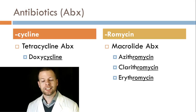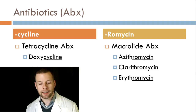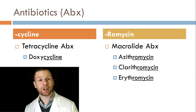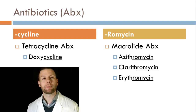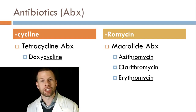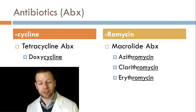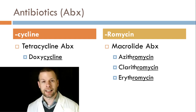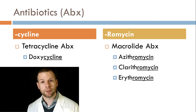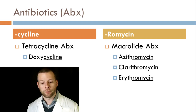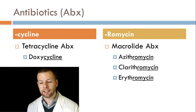Anything that ends in '-cycline' is a tetracycline antibiotic. Sometimes you'll see the actual drug called tetracycline — brand name Sumycin, s-u-m-y-c-i-n — but you'll probably never see that brand name. Doxycycline is one you'll see pretty often. It comes in a few different forms, but it is a tetracycline antibiotic because it ends in '-cycline.'